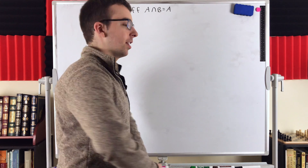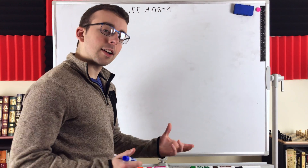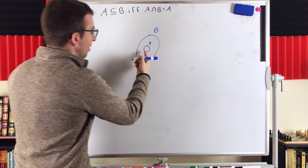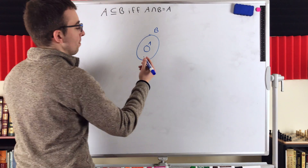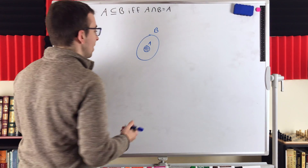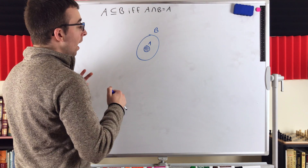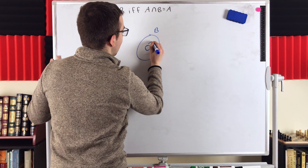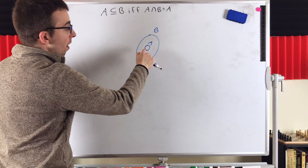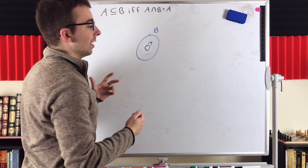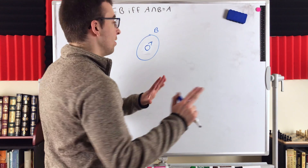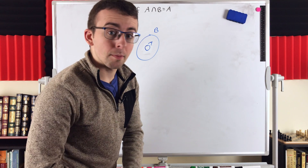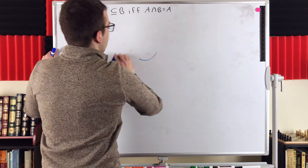Before we jump into the proof, I think this is a pretty easy to understand result. If we've got a set B that has some subset A, what is the intersection of these sets? Well, clearly it's A — that piece in the middle, the stuff inside of A, is in both A and B, so that is their intersection. And then conversely, if the intersection of some set B with some set A is just A, then all of the elements in A must be in B, otherwise the intersection wouldn't equal A, and so A must be a subset of B. Nothing makes it more clear than a proof, so let's jump in.